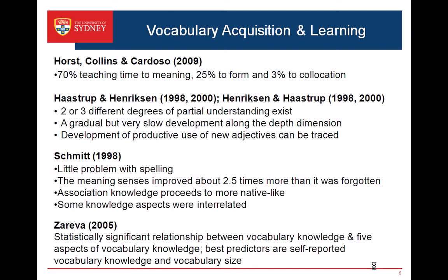In Schmidt's 1998 study, tracing three university students over one academic year, he found that spelling was not a problem and meaning sense improved. Their word association knowledge became more native-like over the year, and some aspects of vocabulary knowledge were found to be interrelated. From these studies, spelling and meaning seem to be the most important aspects in the vocabulary development process. Zevra tested Harrison's three-dimensional model and found a statistically significant relationship between students' actual vocabulary knowledge and five other aspects, with the best predictors being students' self-reported vocabulary knowledge and vocabulary size.